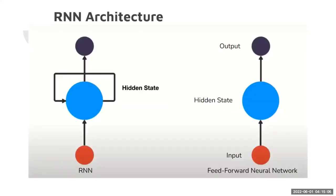Looking at the architecture of RNNs, we have on the right-hand side a feed-forward neural network, which has an input, a hidden state, and an output. Most of the work is done in the hidden state. If you put a loop in the hidden state of the feed-forward neural network, you will be able to pass the previous information and affect it in the way you want. This is how RNNs are able to recognize patterns and predict words.